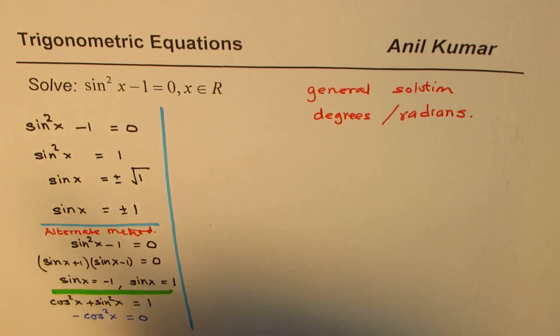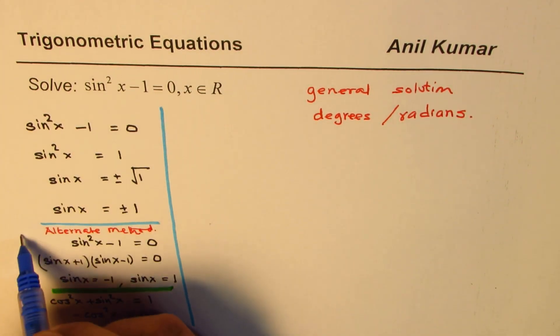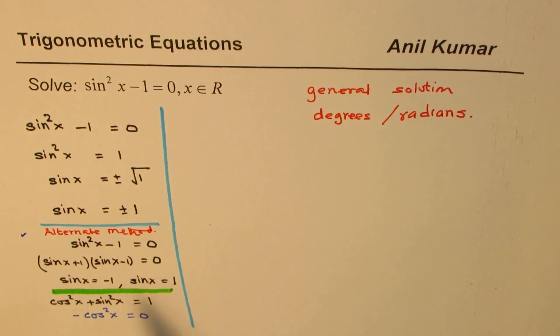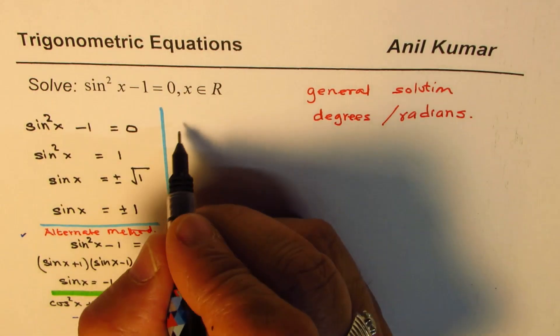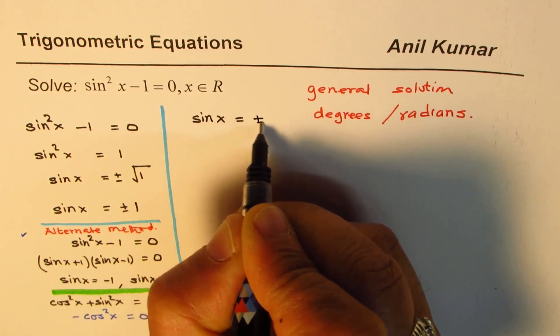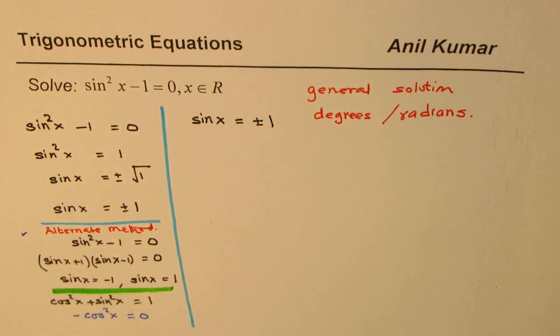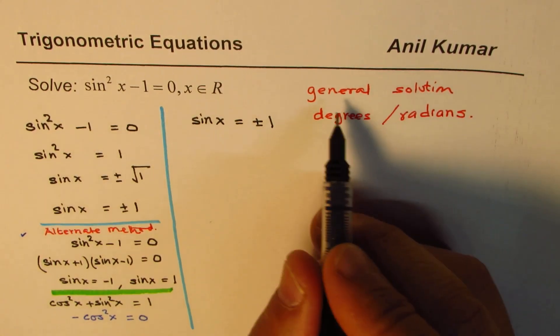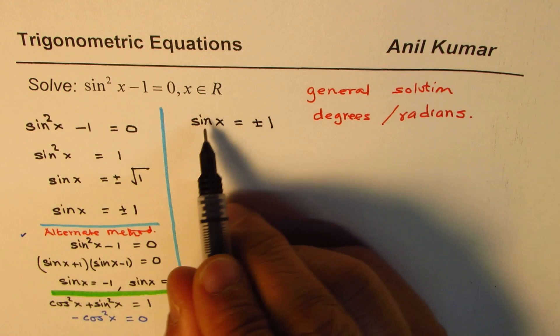But we will prefer these two methods. So, I prefer either this method or that method. Anyway, we do have a solution here. And we are saying that sine x is equals to plus and minus 1. Now, the question is, how to write general solution of this?